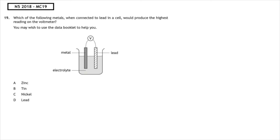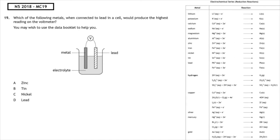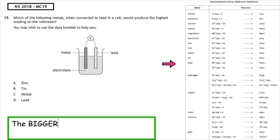This past paper question is from the National 5, 2018, multiple choice 19. Which of the following metals when connected to lead in a cell would produce the highest reading on the voltmeter? You may wish to use your data booklet to help you. So we need to identify the position of lead in the electrochemical series and it wants the highest reading. So remember, the bigger the gap, the bigger the voltage. If we look at the positions of all the other metals alongside lead, we can see that zinc has the biggest gap. So therefore, multiple choice answer A is the correct answer.